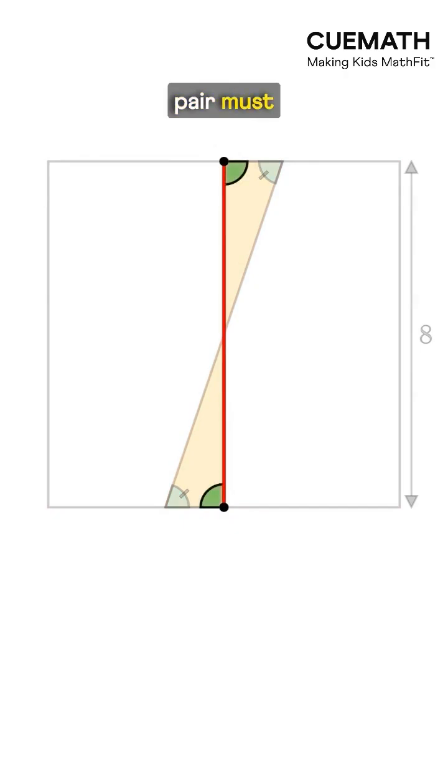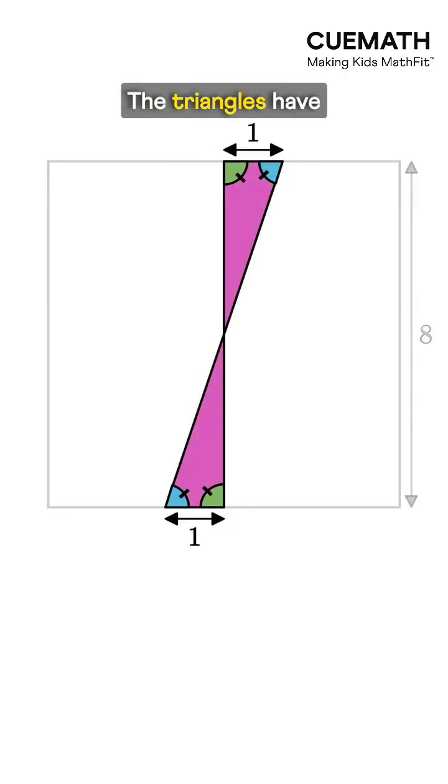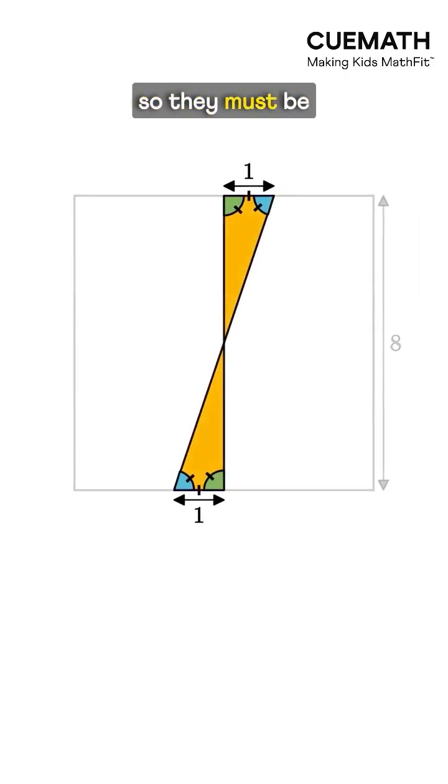Similarly, the other pair must also be equal. The triangles have equal angles and an equal included side, so they must be congruent.